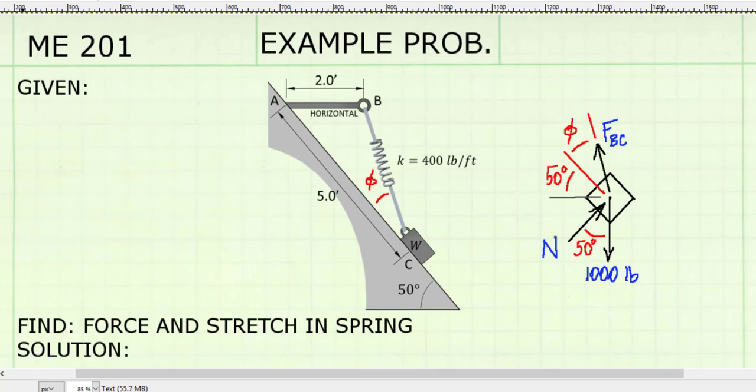So let's find the angle phi. If we look at our given information, we've got a triangle from point A to point B, point B to point C, and then point C back to point A. It's not a right triangle, but we do have two sides, and since we know that AB is horizontal, then this angle here will be 50 degrees.